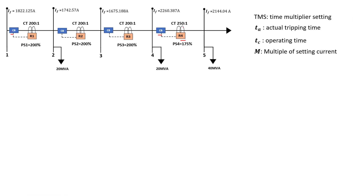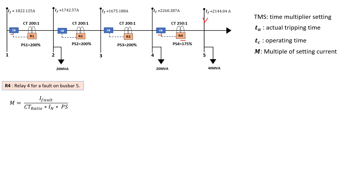Let's go ahead and calculate the tripping time for relay four. Relay four is protecting the load on bus bar five, so it is looking out for the fault or short-circuit current on bus bar five, which is 2144 A. The first thing to do is calculate the multiple of setting current. For relay four looking out for a fault on bus bar five, M equals the fault current divided by the CT ratio times the nominal current of the CT, times the plug settings. The nominal current is 1 A, and replacing all values we find M is equal to 4.9.